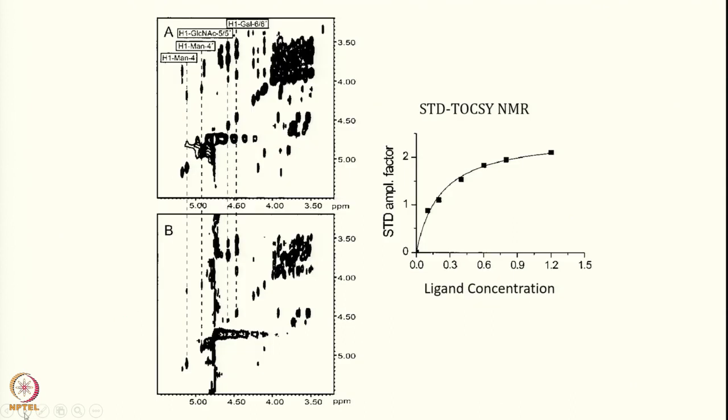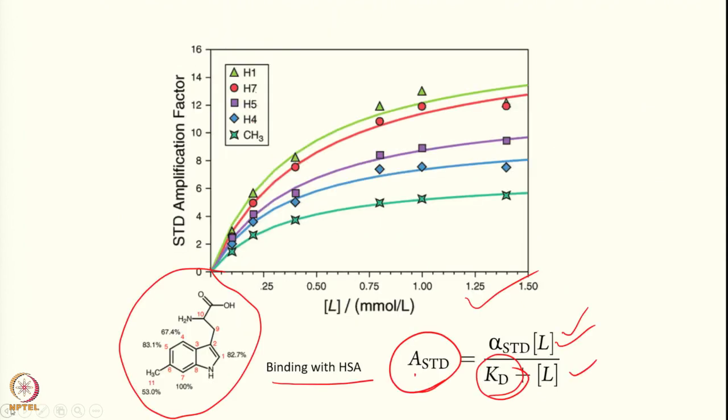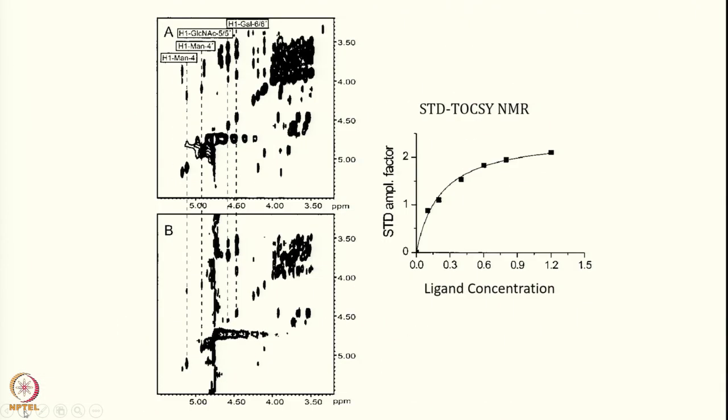This simple experiment helps us get the signal. Now, can we go to an advanced version of STD? STD was just basically a 1D experiment. Can we combine this with a 2D experiment? We can get even more information. STD can be combined with TOCSY or even NOESY, so that even when our ligand becomes bigger, we can get information in a 2D fashion.